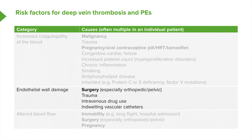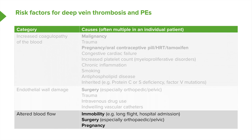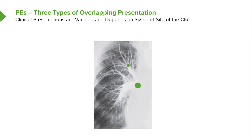Endothelial wall damage makes a clot more likely to occur, and this is most obvious in patients who've had pelvic surgery — either gynaecological or orthopaedic — in which case they have a very high risk of developing a DVT and potentially a PE. If blood flow is reduced because of immobility, surgery, pregnancy, etc., that will also make a clot more likely to form. The patients most at risk of DVTs and therefore PEs are those with malignancy, recent surgery (especially pelvic or orthopaedic), those who are pregnant, and those who have been immobile due to a long flight or long car journey.